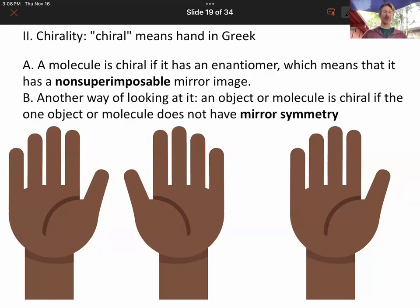Now, this is going to be a little bit of review of what we just talked about. For example, chirality, which deals with chiral things, and we said that chiral means hand in Greek.